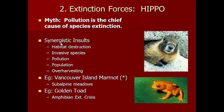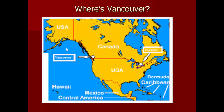One last point: when I say 'synergistic insults,' that's suggesting synergy — when two things work together to bring about something they wouldn't achieve on their own. So these properties interact: if you have pollution and overpopulation of humans together, that's going to do more damage than either in isolation.